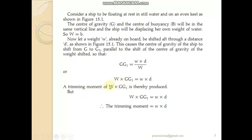The left-hand side — W × GG1 — is what we call the trimming moment. The trimming moment is simply w × d: the mass moved on the vessel multiplied by the distance moved. The definition of moment is force times distance, so here the trimming moment is the weight moved multiplied by the distance moved by that weight.